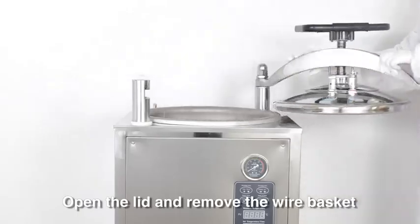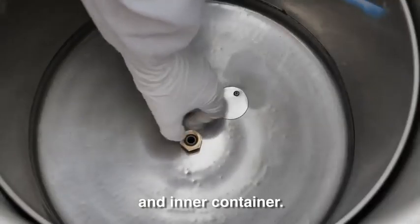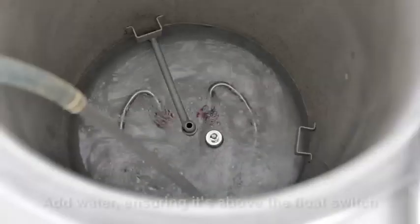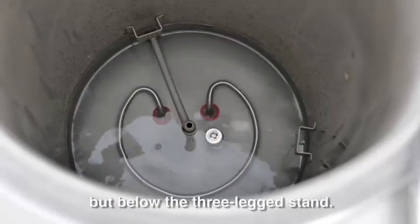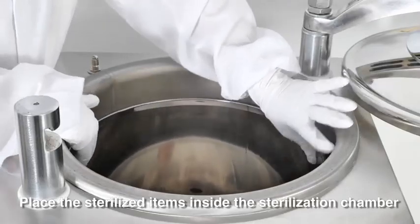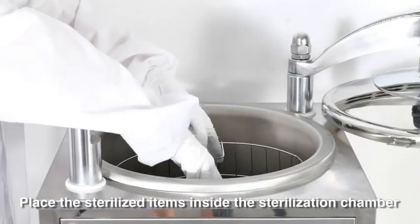Open the lid and remove the wire basket and the inner container. Add water, ensuring it's above the float switch but below the three ledges of stand. Place the sterilized items inside the sterilization chamber.